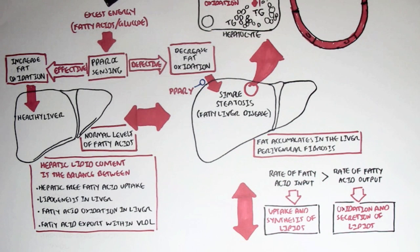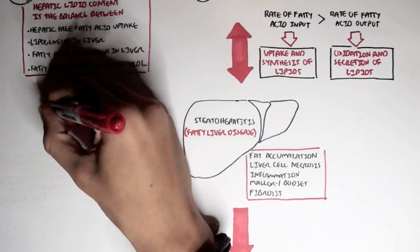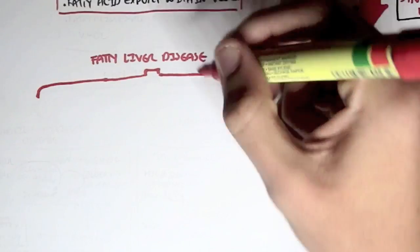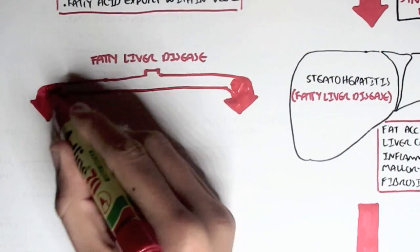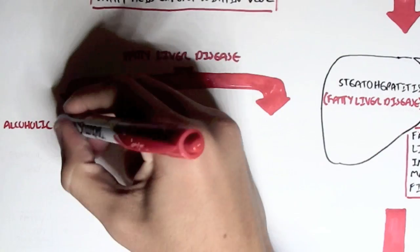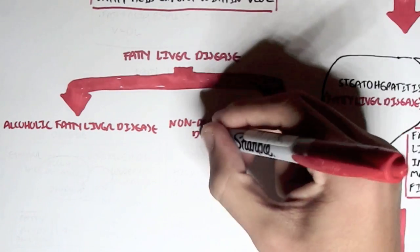Steatosis is essentially when we have accumulation of fat within the liver. This can lead to steatohepatitis, when we have inflammation and the accumulation of fat. Both these states are fatty liver diseases. There are actually two types of fatty liver diseases: alcoholic fatty liver disease and non-alcoholic fatty liver disease, abbreviated NAFLD.